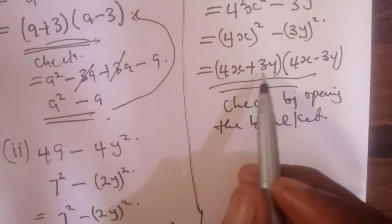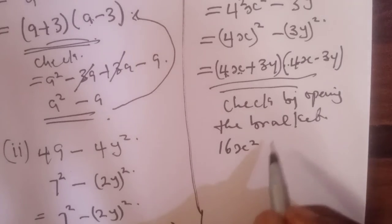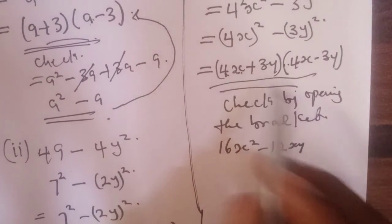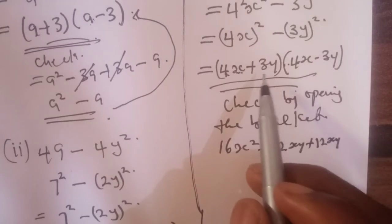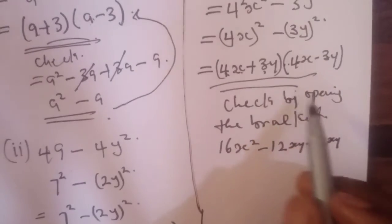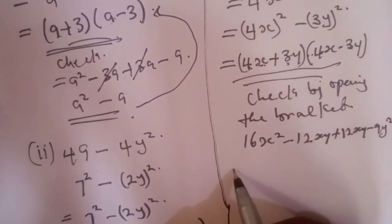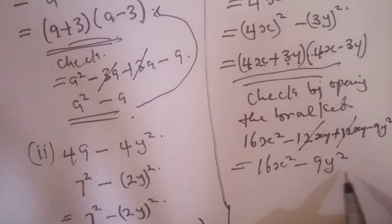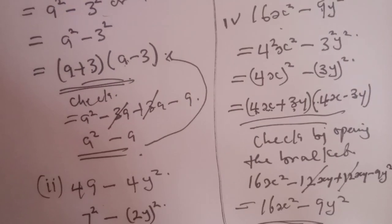Let's check by opening the bracket: 4s times 4s gives 16s²; 4s times minus 3y gives minus 12sy; plus 3y times 4s gives plus 12sy; and 3y times minus 3y gives minus 9y². The middle terms cancel, and we are left with 16s² minus 9y², which matches our original question. If you've enjoyed the video, please don't forget to like, comment, share, and subscribe. Thank you.